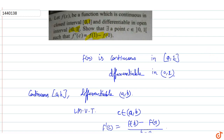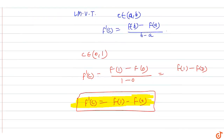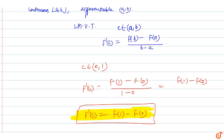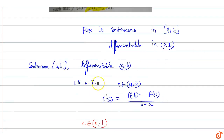So by the Lagrange Mean Value Theorem, we have proved that f'(c) is equal to f(1) minus f(0). By the LMVT theorem, this is proved. So this is the answer for this question.